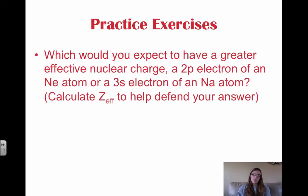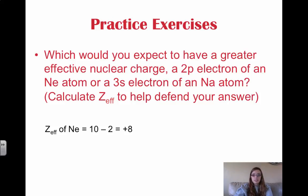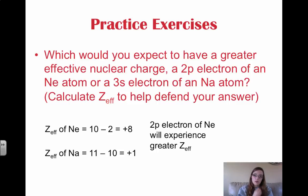The last question: which would you expect to have a greater effective nuclear charge — a 2p electron of a neon atom or a 3s electron of a sodium atom? Calculate Z-effective to help defend your answer. The effective nuclear charge of neon is +8: 10 protons minus 2 core electrons equals +8. Sodium is +1. Therefore, the 2p electron of neon will experience a greater effective nuclear charge — it will have a much larger net positive felt from the nucleus.